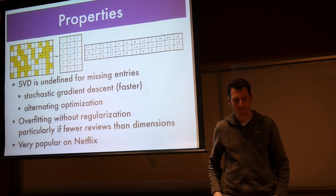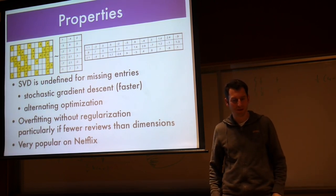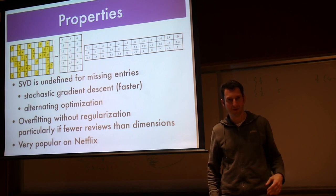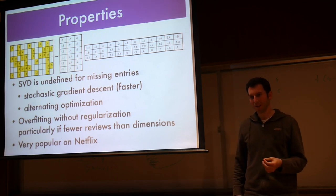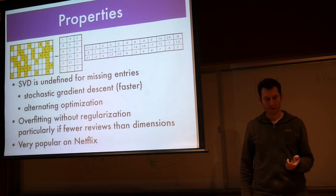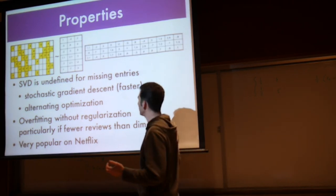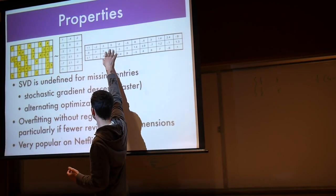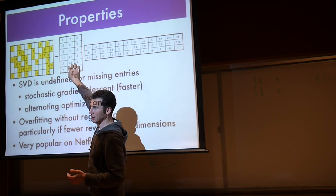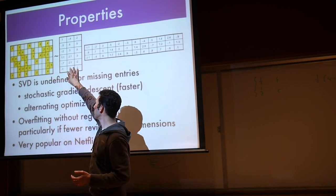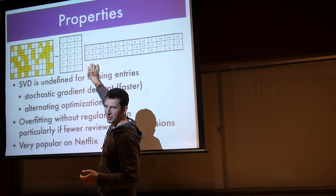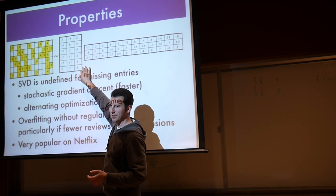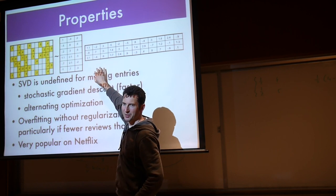Obviously not SVD because you are really missing all the unknown entries. Furthermore, you can actually solve this fairly efficiently by stochastic gradient descent. The alternative is to optimize over this matrix given that one, optimize over this case given that. In each case, it's a least-mean-square problem. Or you could just use joint stochastic gradient descent.